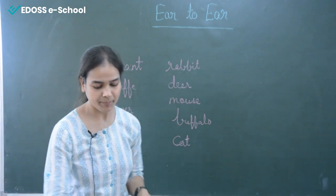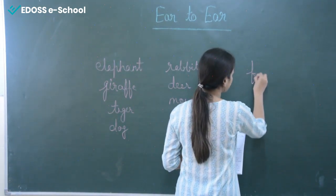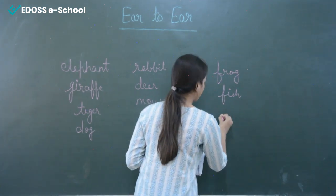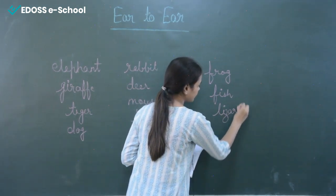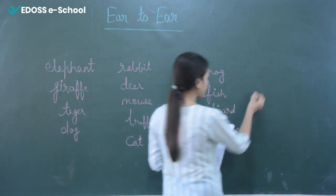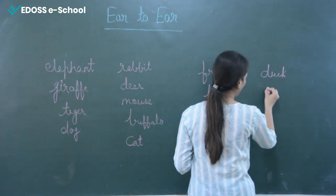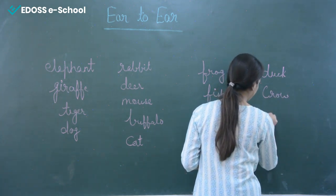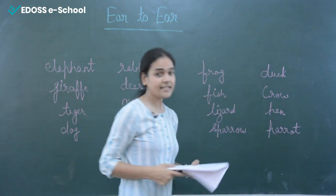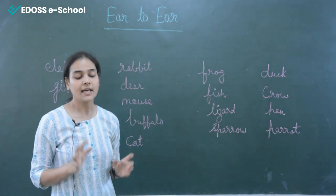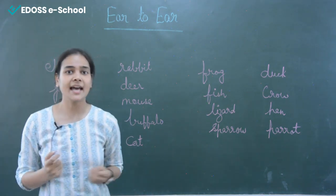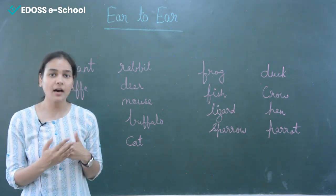But what about these animals? Frog, fish, lizard, sparrow, duck, crow, hen, parrot, etc. These are the animals whose ears are not visible from the outside. Could you guess whether these animals have ears or not? These animals also have ears, but we cannot see them from the outside.